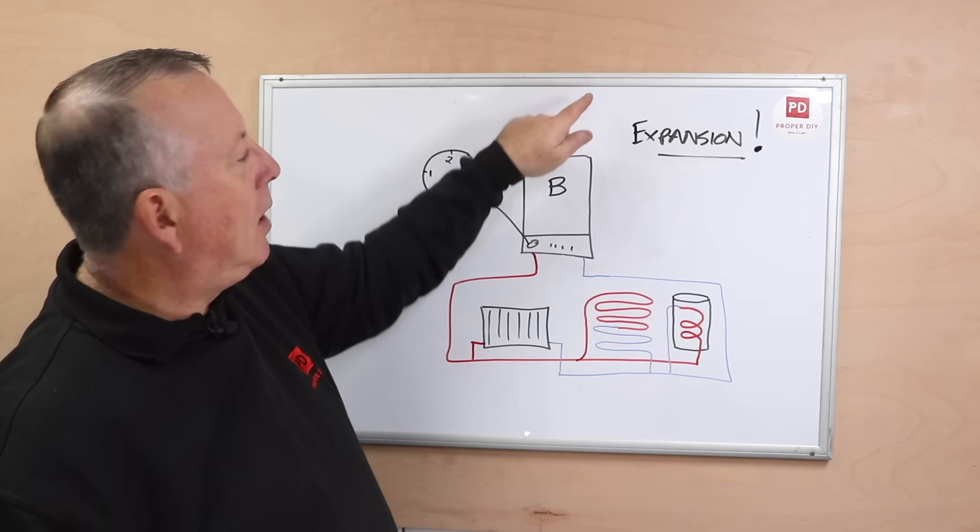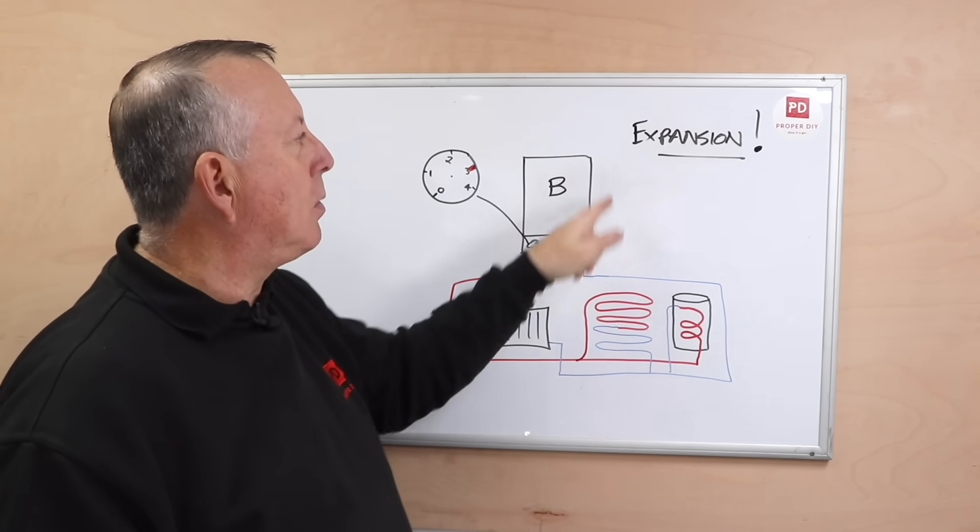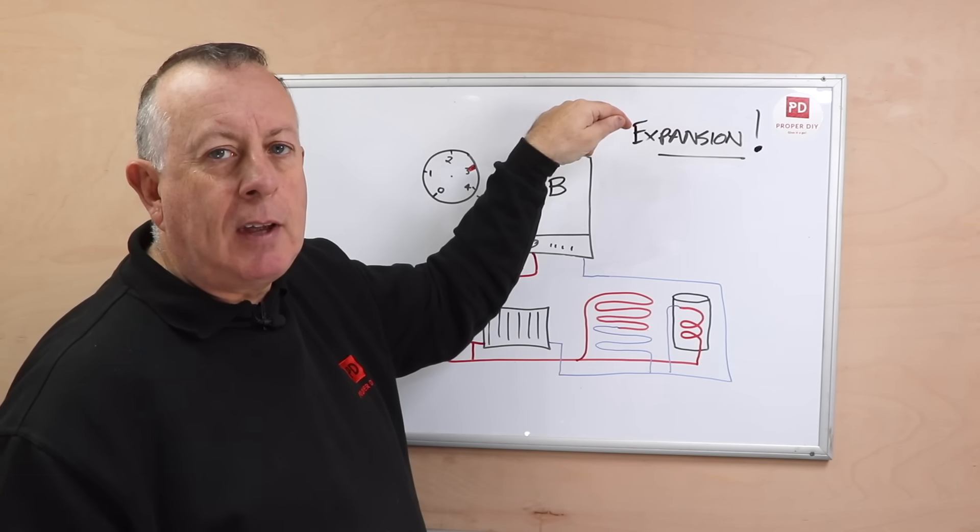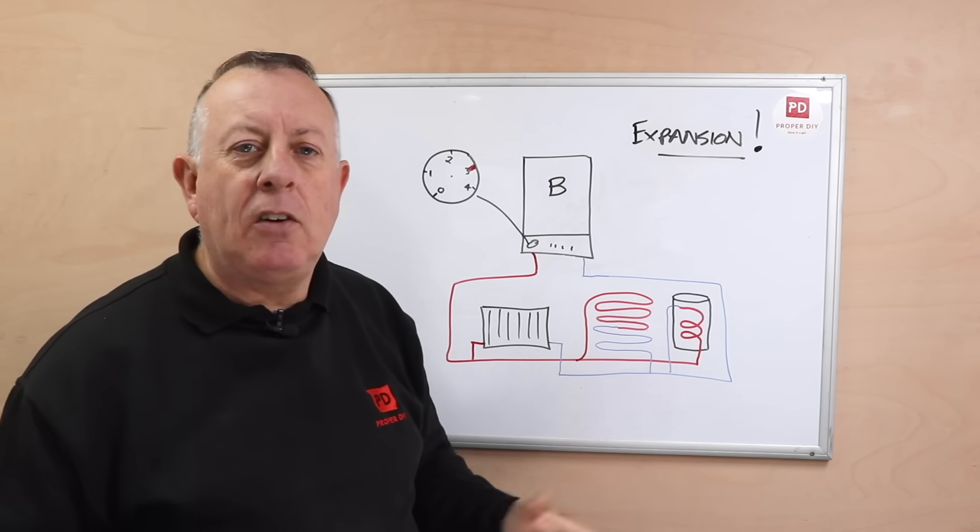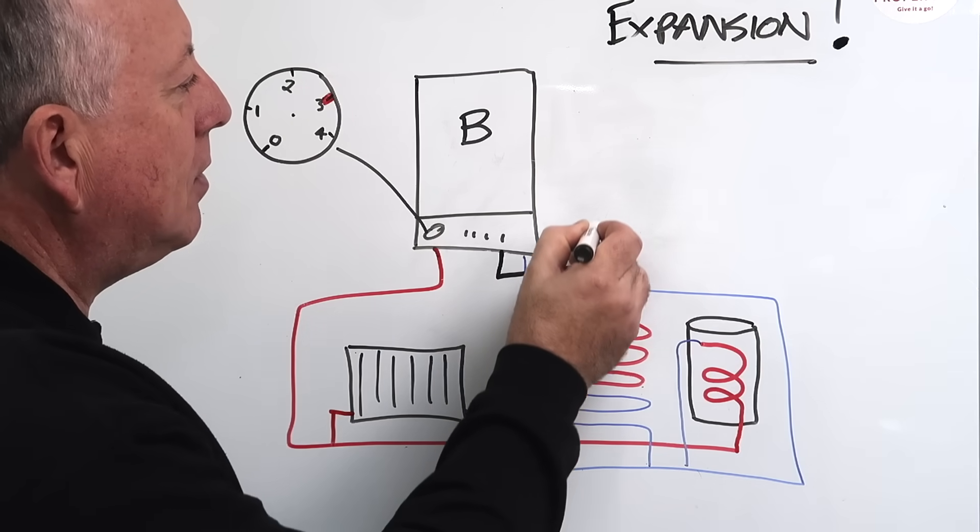Now the way that used to be done once upon a time is you'd have an expansion tank in the loft, and as the water expands it would go up there, dump into the tank, and then refill itself. These days we tend not to have that, so we use something else called an expansion vessel.